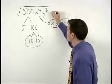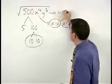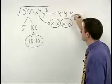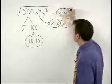And think of y to the third as y times y times y. So we have one pair of y's.